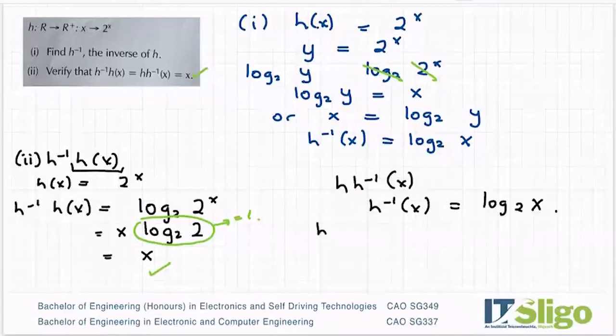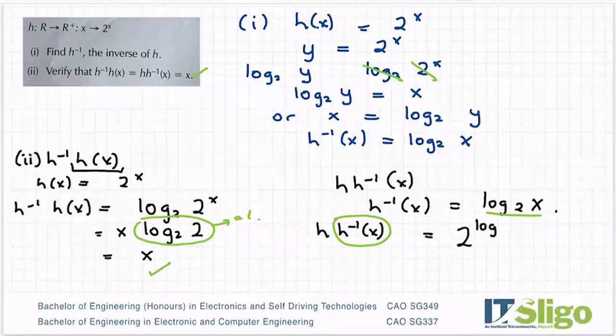Okay, so then h(h^(-1)(x)) means I'm going to feed in this in for my x term in h(x). So I'm going to get 2^(log base 2 of x).